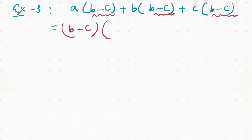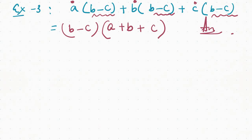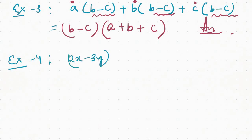The first part is b minus c, the second part is b minus c, the third part is b minus c. The second part comes common, so the third part will be done last.